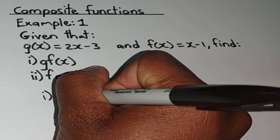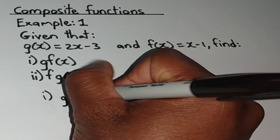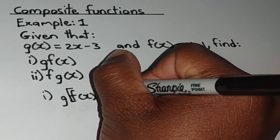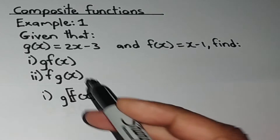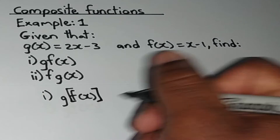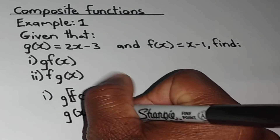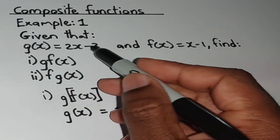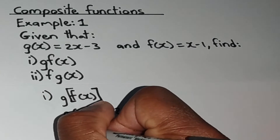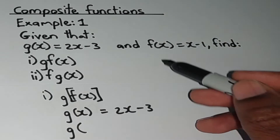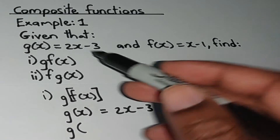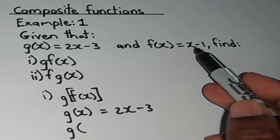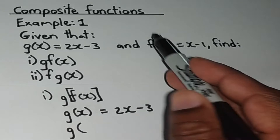Let's start with part 1. Here we have g of f of x, and this is the same thing as substituting the entire f of x function into the g of x function. Recall that the g of x function is equal to 2x minus 3. Now what we're going to do in order to find g of f of x is substitute the f of x function into the g of x function. In other words, wherever we have x, we are going to replace the x with x minus 1, which is the f of x function.